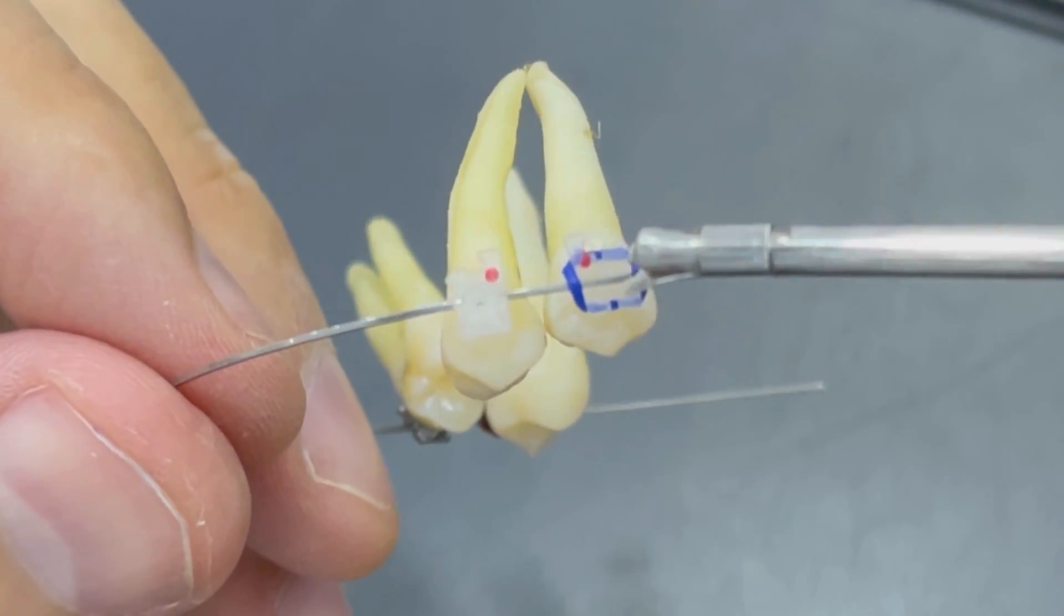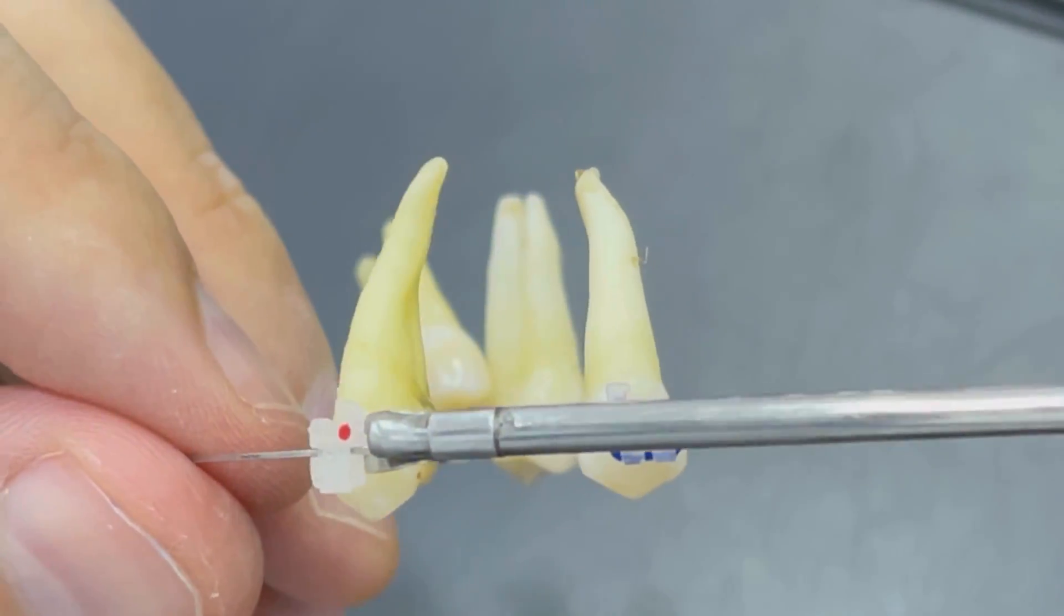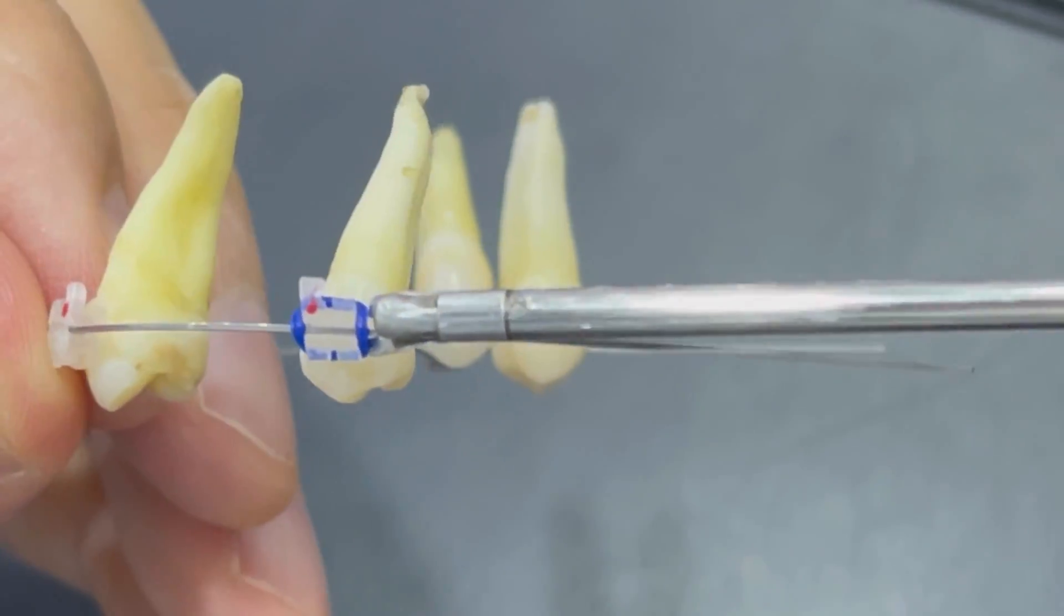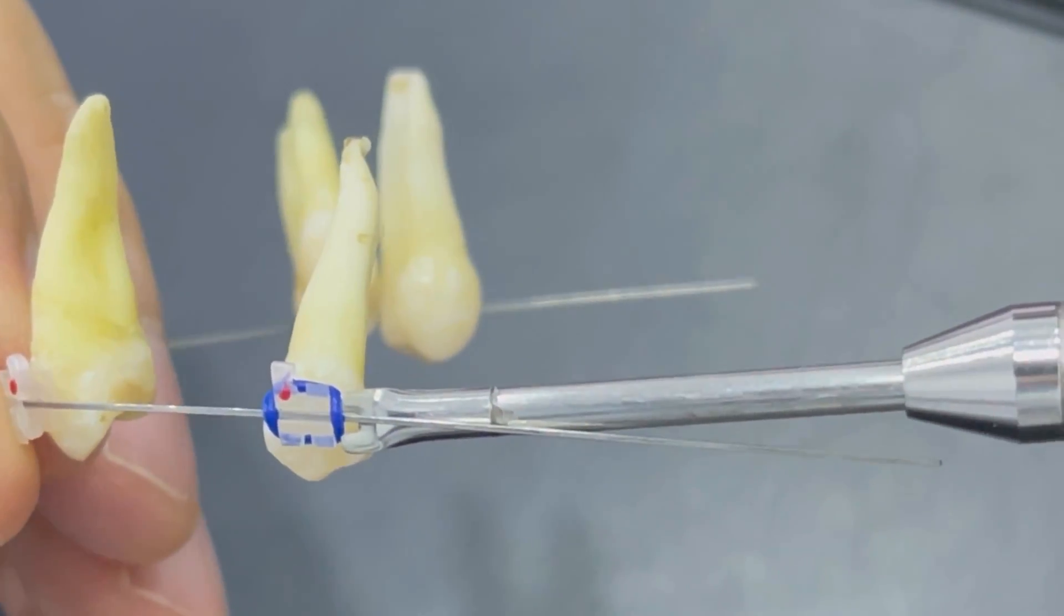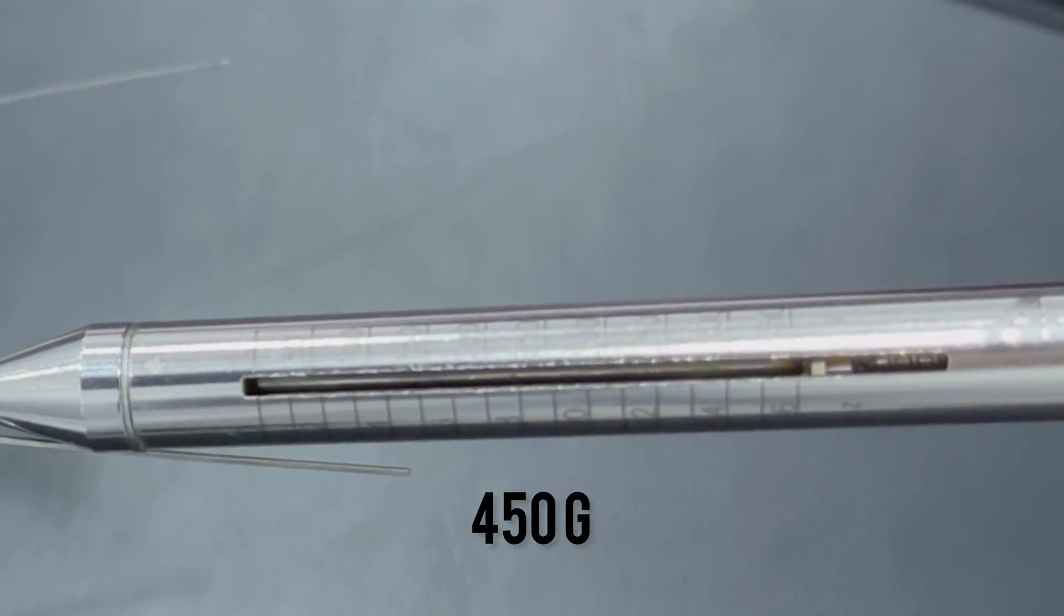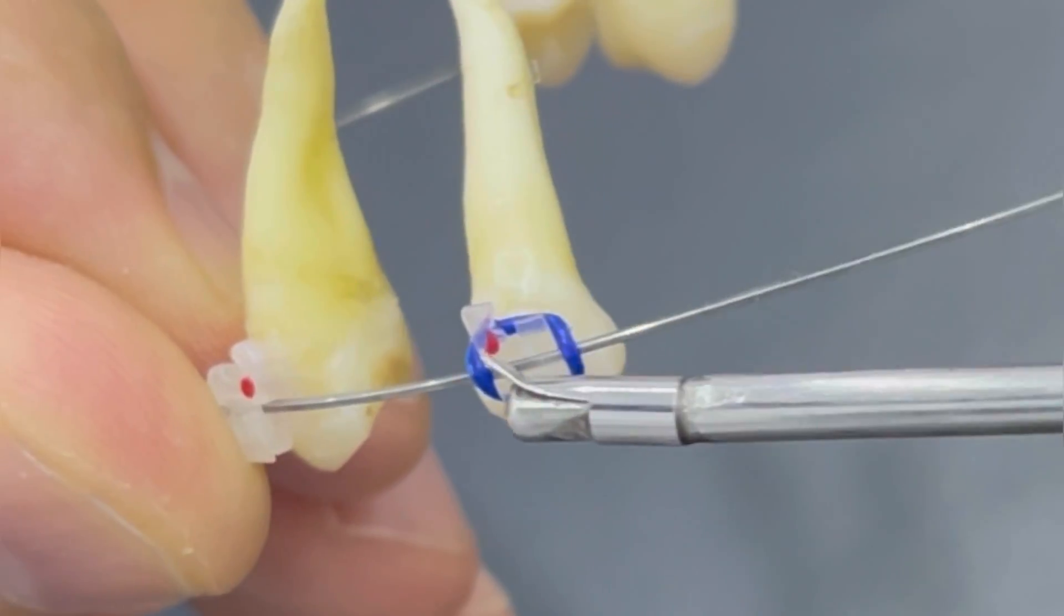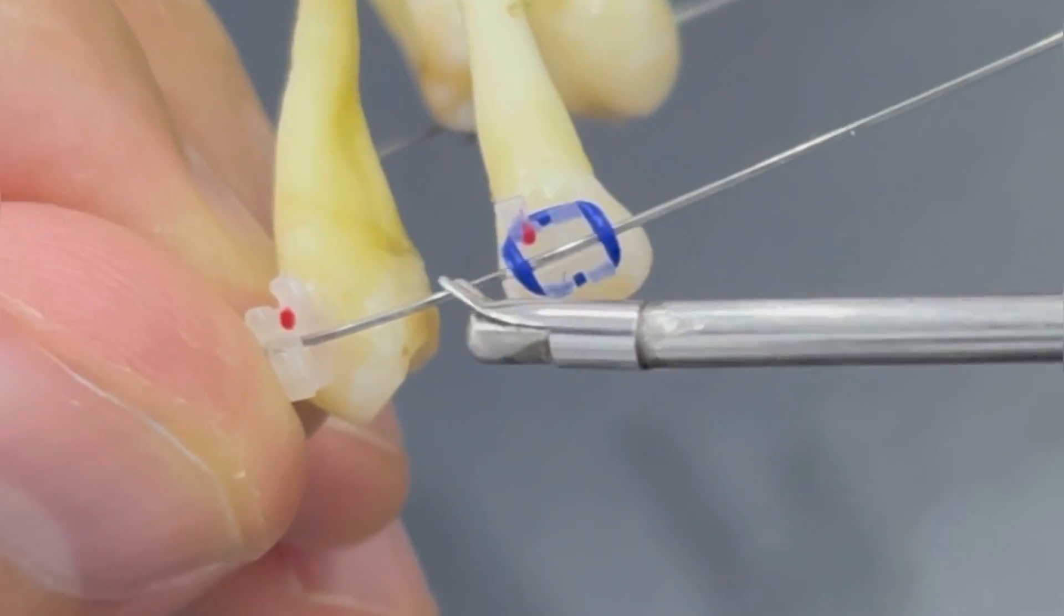Ceramic also has two types: ligating and self-ligating braces. The self-ligating, you can see, is moving very fast and smooth without any resistance, while the ceramic ligating braces require very heavy force, around 450 grams, to move a single tooth because of the friction between ceramic and the wire.